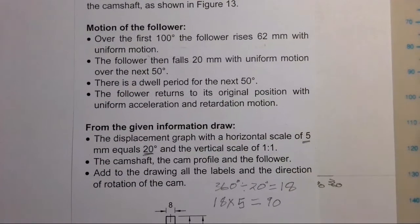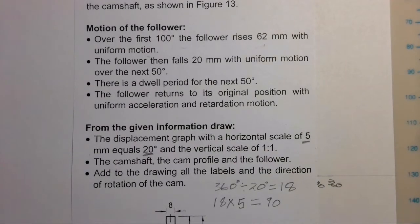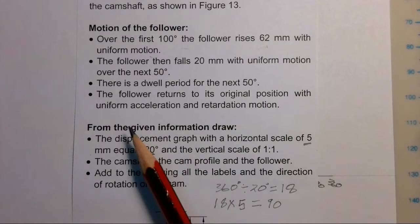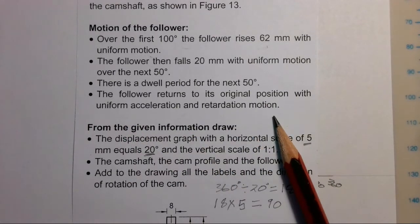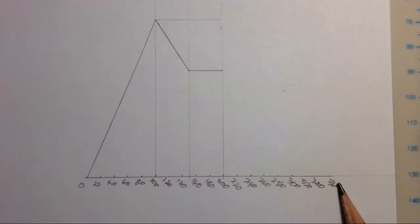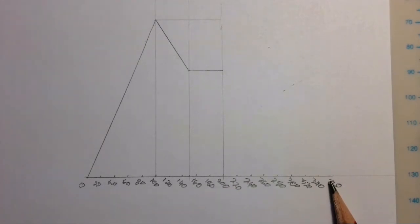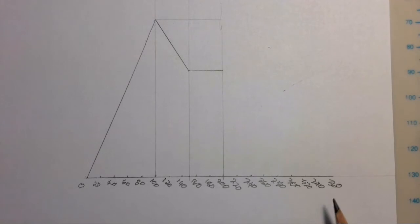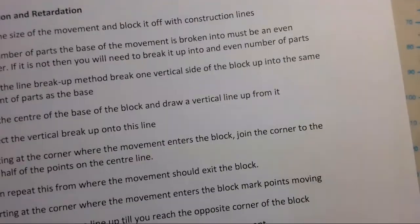Now comes the important part: the acceleration and retardation. The follower returns to its original position with uniform acceleration and retardation motion — going back down from 200 to 360 degrees, from that height all the way back down. We're going to follow a set of steps to complete this motion.